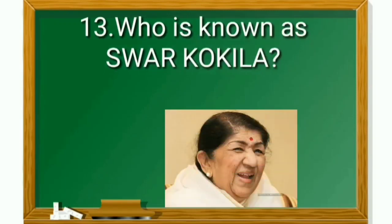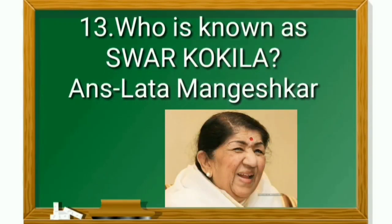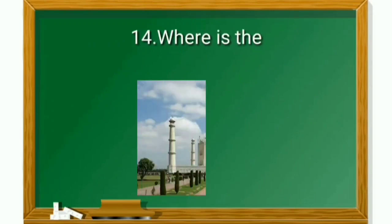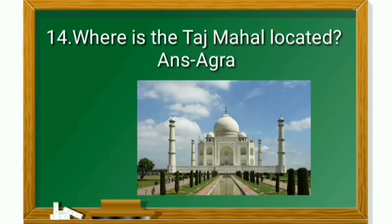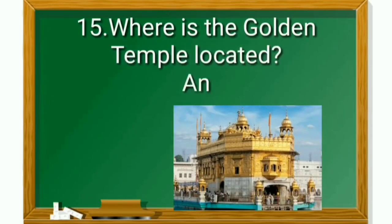Who is known as Swar Kokila? Lata Mangeshkar. Where is the Taj Mahal located? Agra. Where is the Golden Temple located? Amritsar.